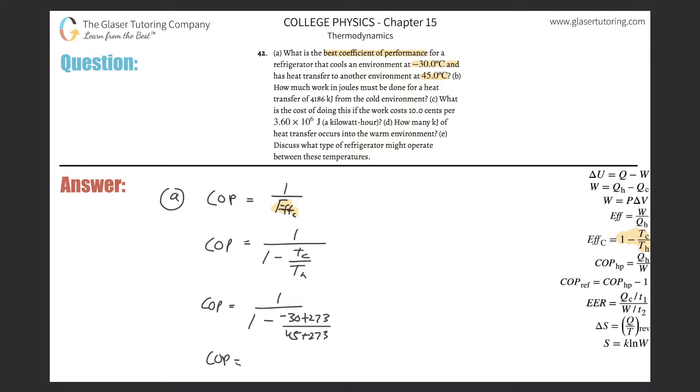So the coefficient of performance will be simply equal to, let's check it out. So negative 30 plus 273, I'm going to do the denominator first, then divide it by 45 plus 273, one minus that value, so the denominator is about 0.2-ish, and then divide that denominator. So it's going to be about 4.24. And that takes care of letter A.